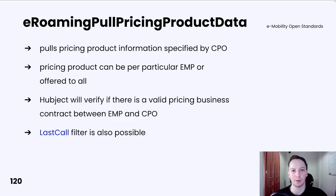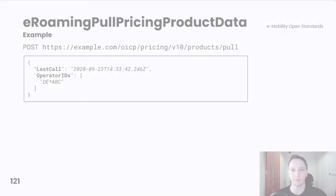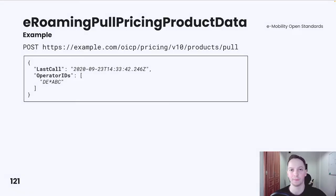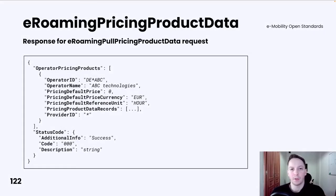Filtering functionality is also offered by providing the lastCall parameter in the request. The request for the eRoaming pull pricing product data operation is very simple — you need to provide a list of operator IDs, in other words, a list of CPOs that you are interested in, and optionally provide the lastCall parameter for filtering. As a response, you will receive pricing product data details for a specific operator.